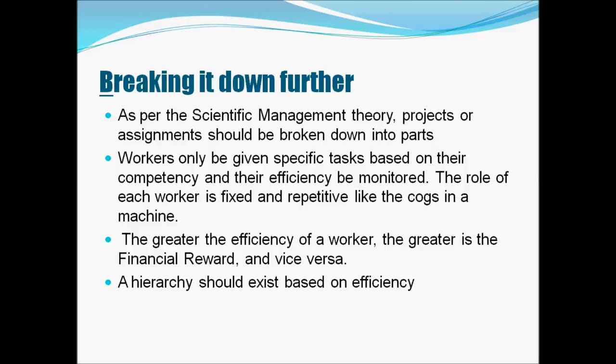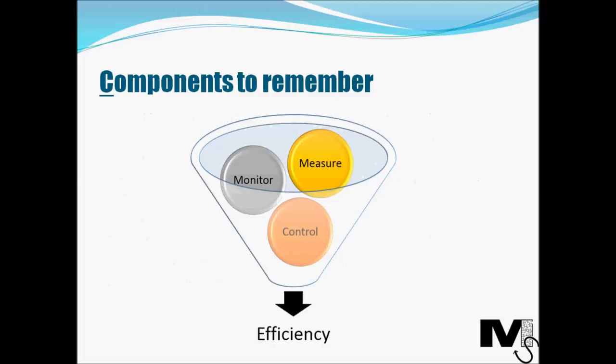The theory looks down on people identified as less efficient and seeks to replace them with more efficient workers. To make it easier to remember, we can look at three components which form the basis of Taylor's theory: monitor, measure, and control — leading to efficiency. Workers need to be monitored at all times, their efficiencies measured, and their outputs and actions controlled. A worker needs to be supervised, allocated specific tasks, and is expected to perform those tasks efficiently.